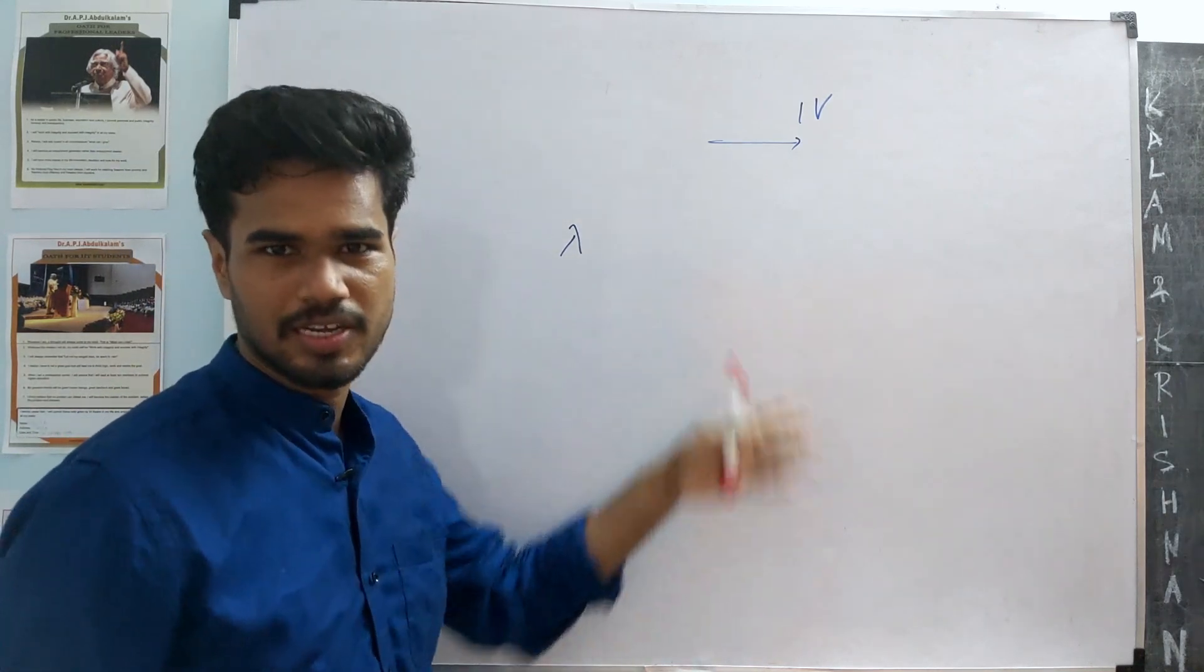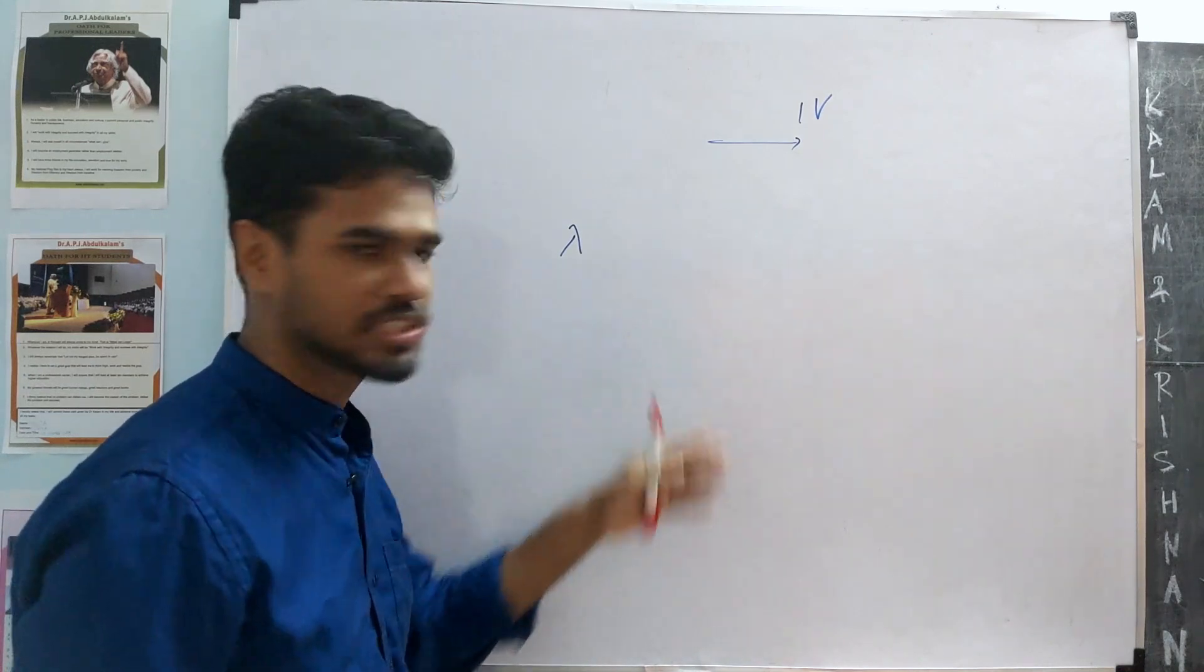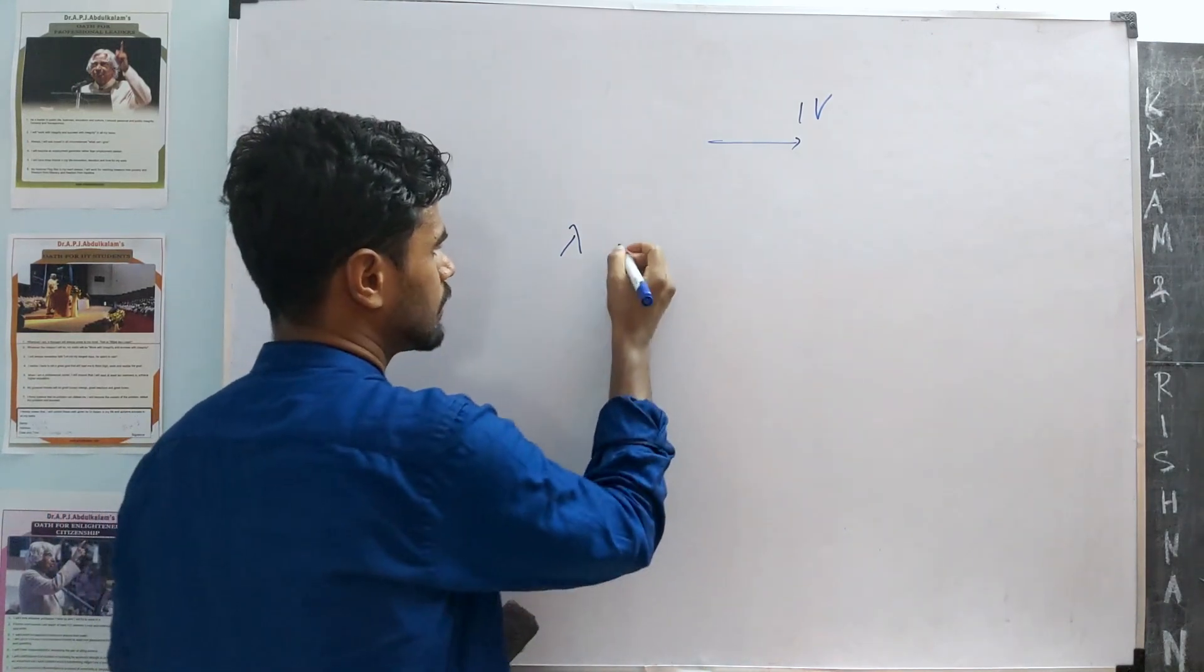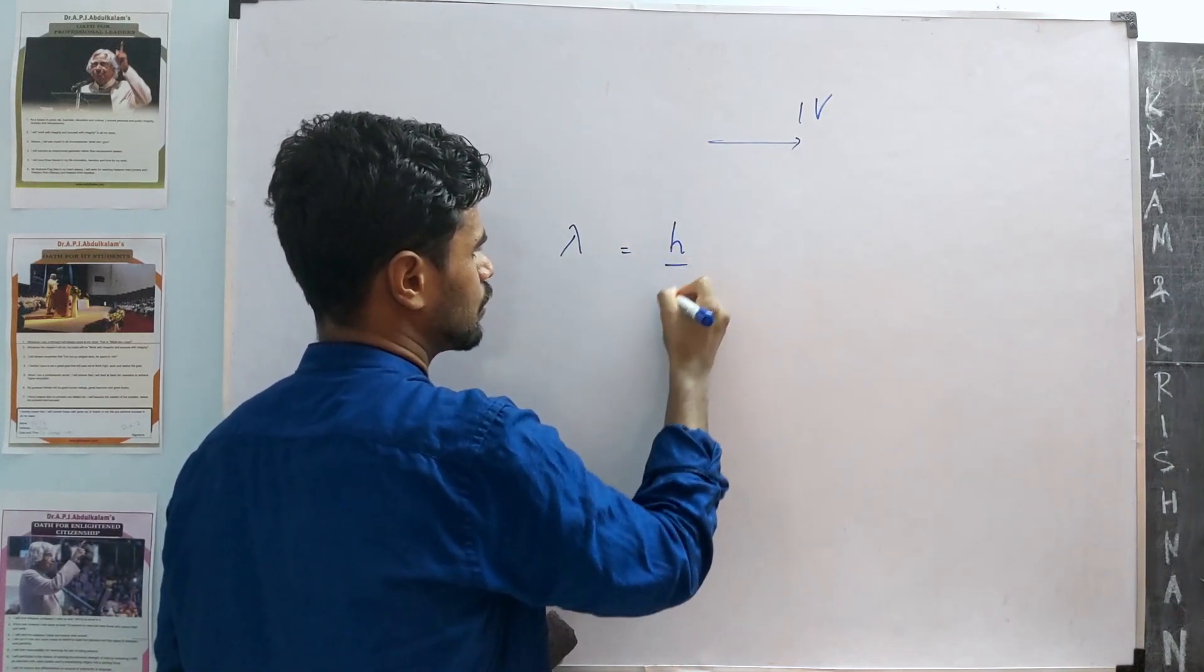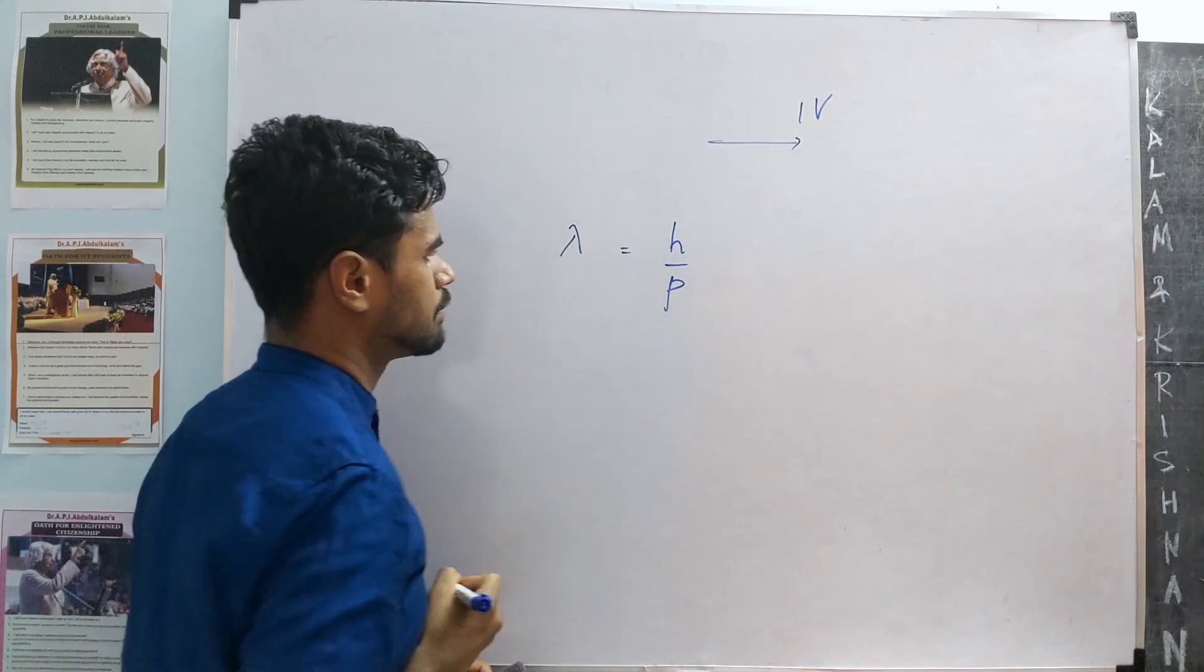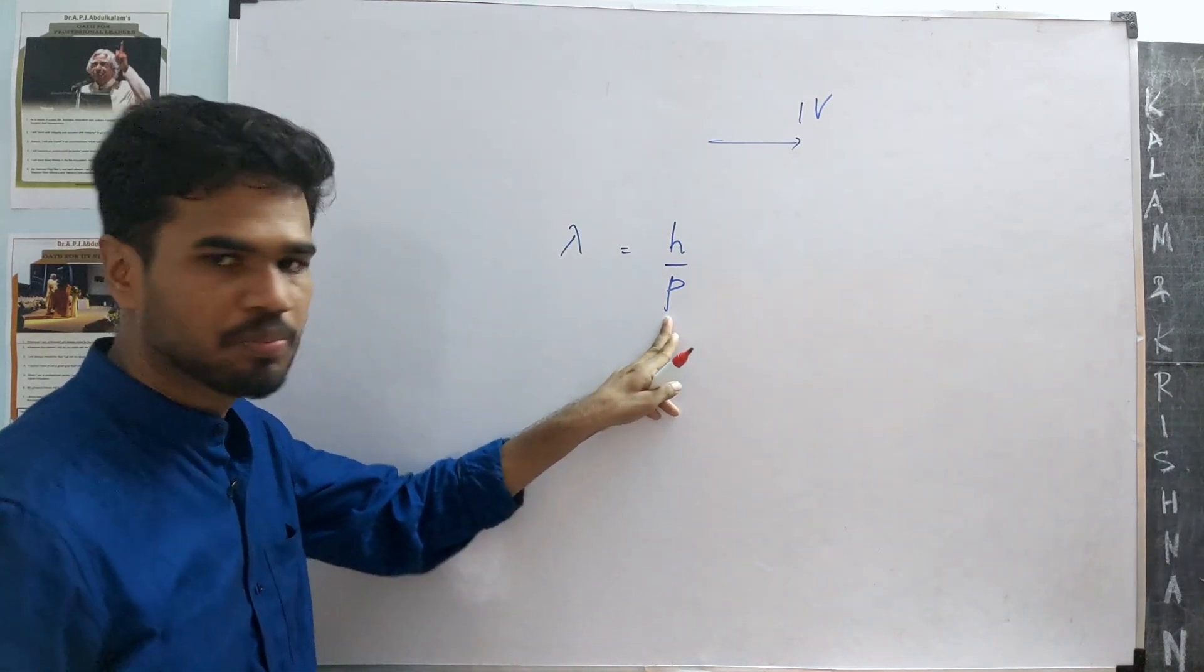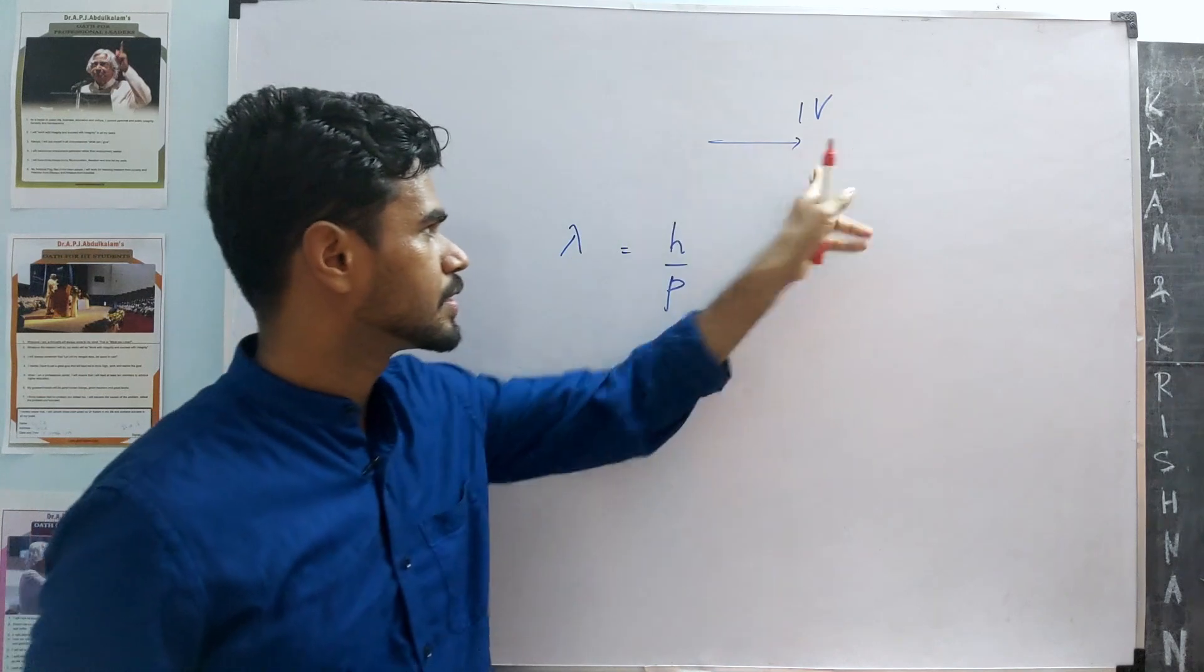Yes, there is the de Broglie wavelength, which is Planck's constant over momentum P. So if we somehow find the momentum of an electron that's being accelerated to a potential of 1 volt, we can calculate its wavelength.